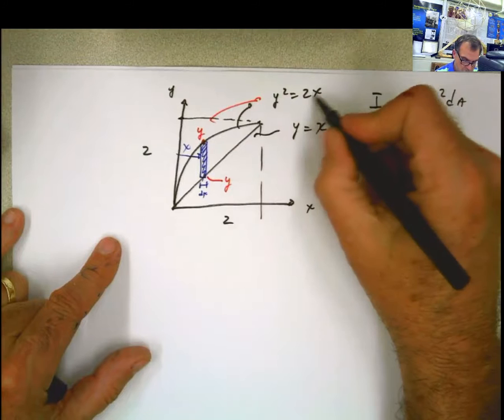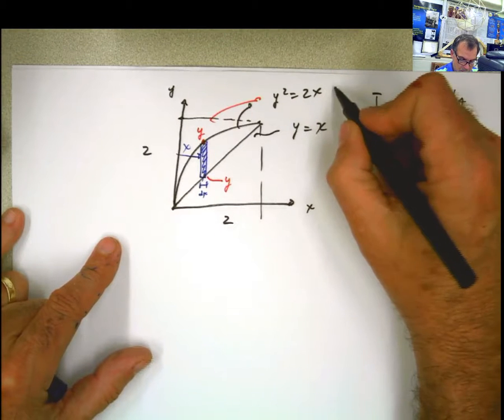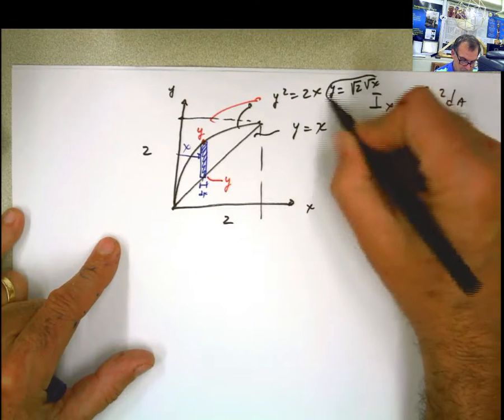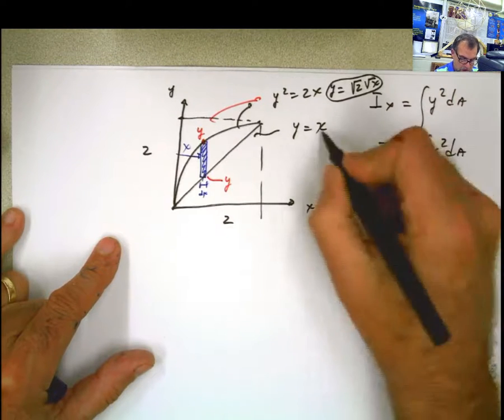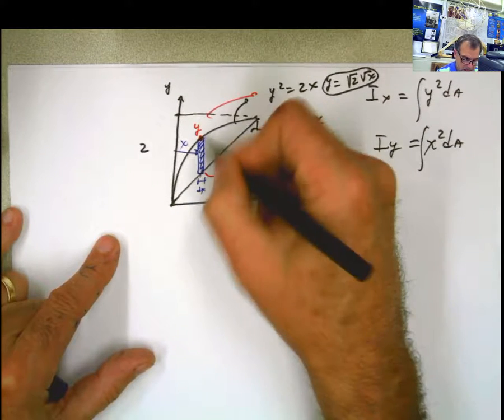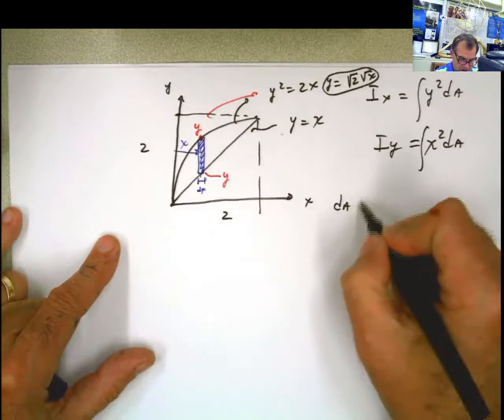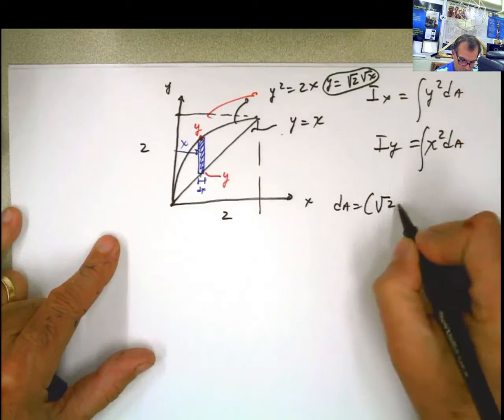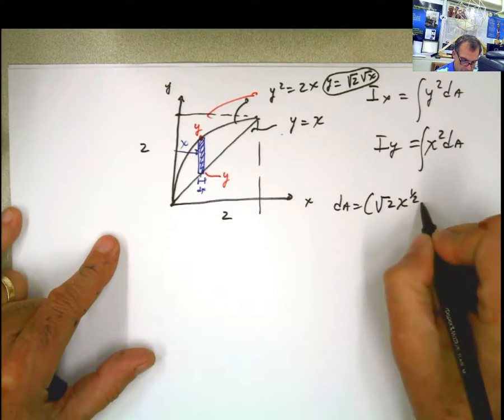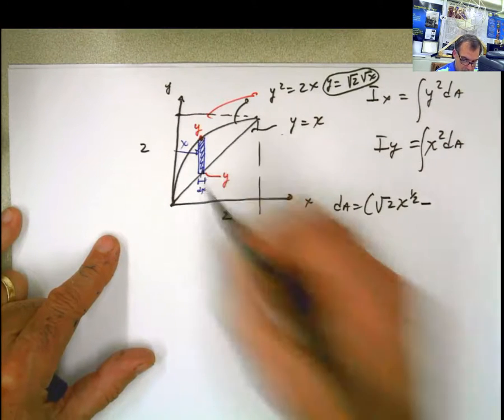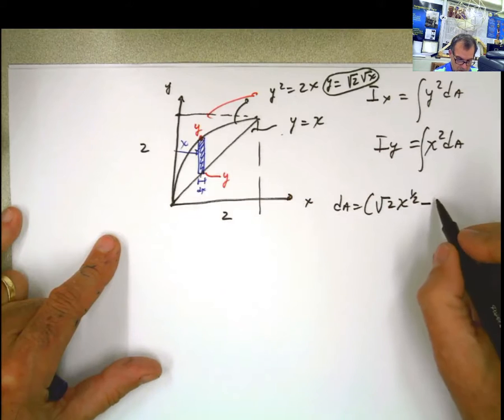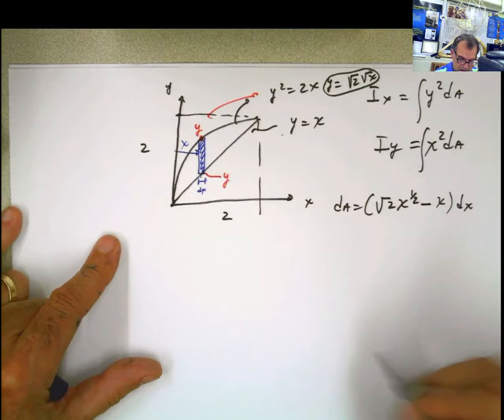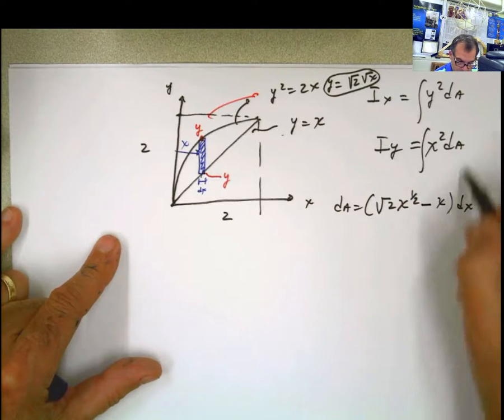This one here is the y defined by the straight line equation. If I solve for y, the value is y equals square root of 2 times the square root of x. So this height, my differential of area, is square root of 2 times x to the 1/2 minus x, multiplied by dx. That's my differential of area. Plug this into that. Done.